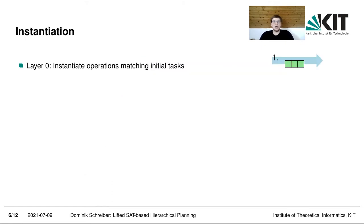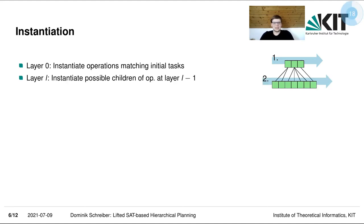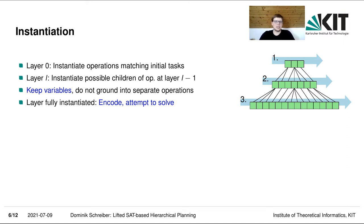At the very first layer, we instantiate all of the operations which match our initial tasks. Then for the subsequent layer, we instantiate all of the possible children of each operation from the previous layer, sweeping over it from left to right to generate a new layer. If we encounter an operation which contains variables, in contrast to previous approaches we do not fully ground it into many ground operations — instead, we keep this so-called lifted operation with variables in our structures. When a layer is fully instantiated, we encode it and attempt to solve the formula encoded so far.